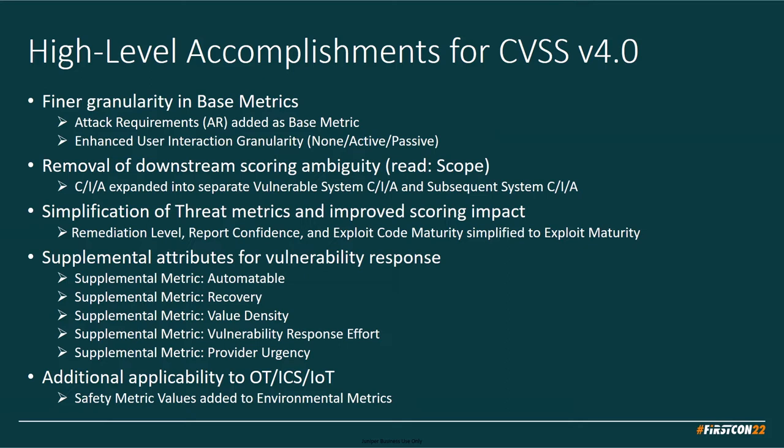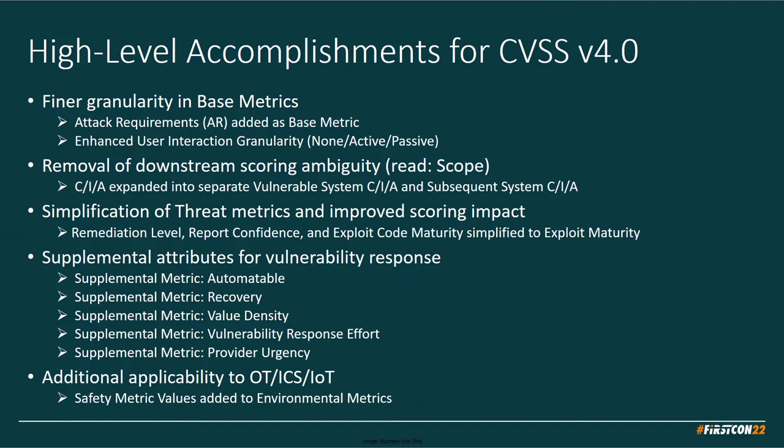We've added attack requirements and enhanced user interaction — sometimes there's an easy way to fool a user, sometimes it's difficult, so now we have more granularity there. Everybody loves scope, so this is going to cause a tear. We've decided to remove scope and instead remove that lossy compression and increase the confidentiality, integrity, and availability to the vulnerable and impacted components — which should help Juniper and Cisco actually agree on scoring.